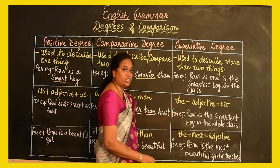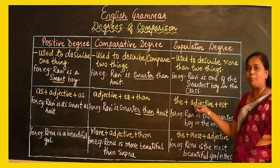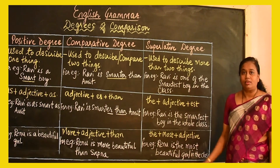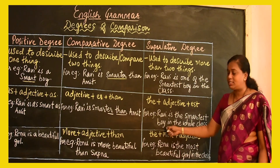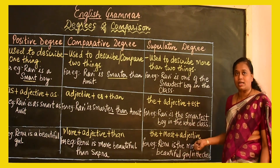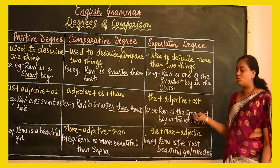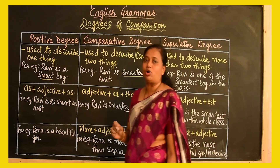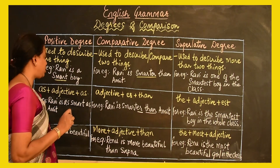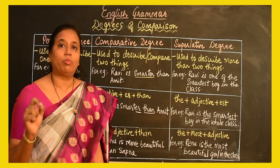In the superlative degree, the syntax is: the + adjective + est. In the example, we say 'Ravi is the smartest boy in the class.' So we use 'the' and add 'est' to the adjective 'smart.' This was for all the regular adjectives. Another example of a regular adjective: 'Kiran is a clever boy.'